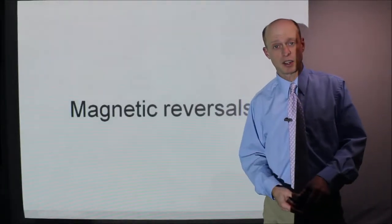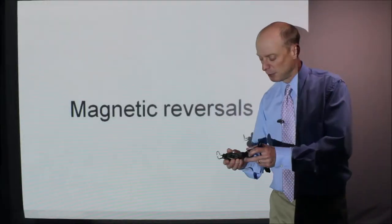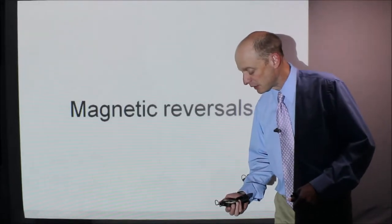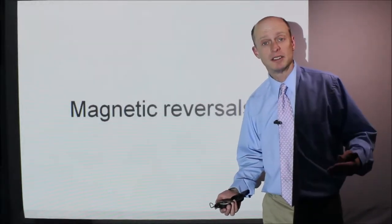Magnetic reversals. First, I want to start out with my compass here. I have this compass and the arrow on there always points north. And why does it do that?